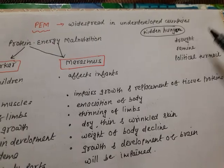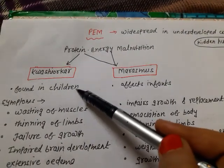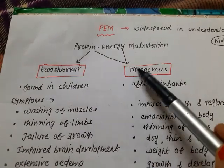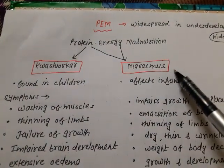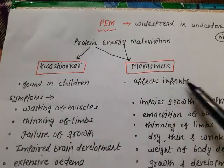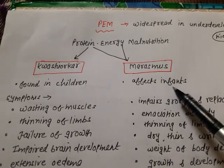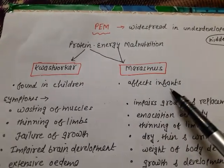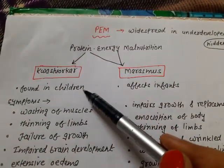PEM affects infants and children to produce Marasmus and Kwashiorkor. These are the two disorders of PEM. Marasmus is common in infants — babies under one year of age — and Kwashiorkor is found in children older than that.